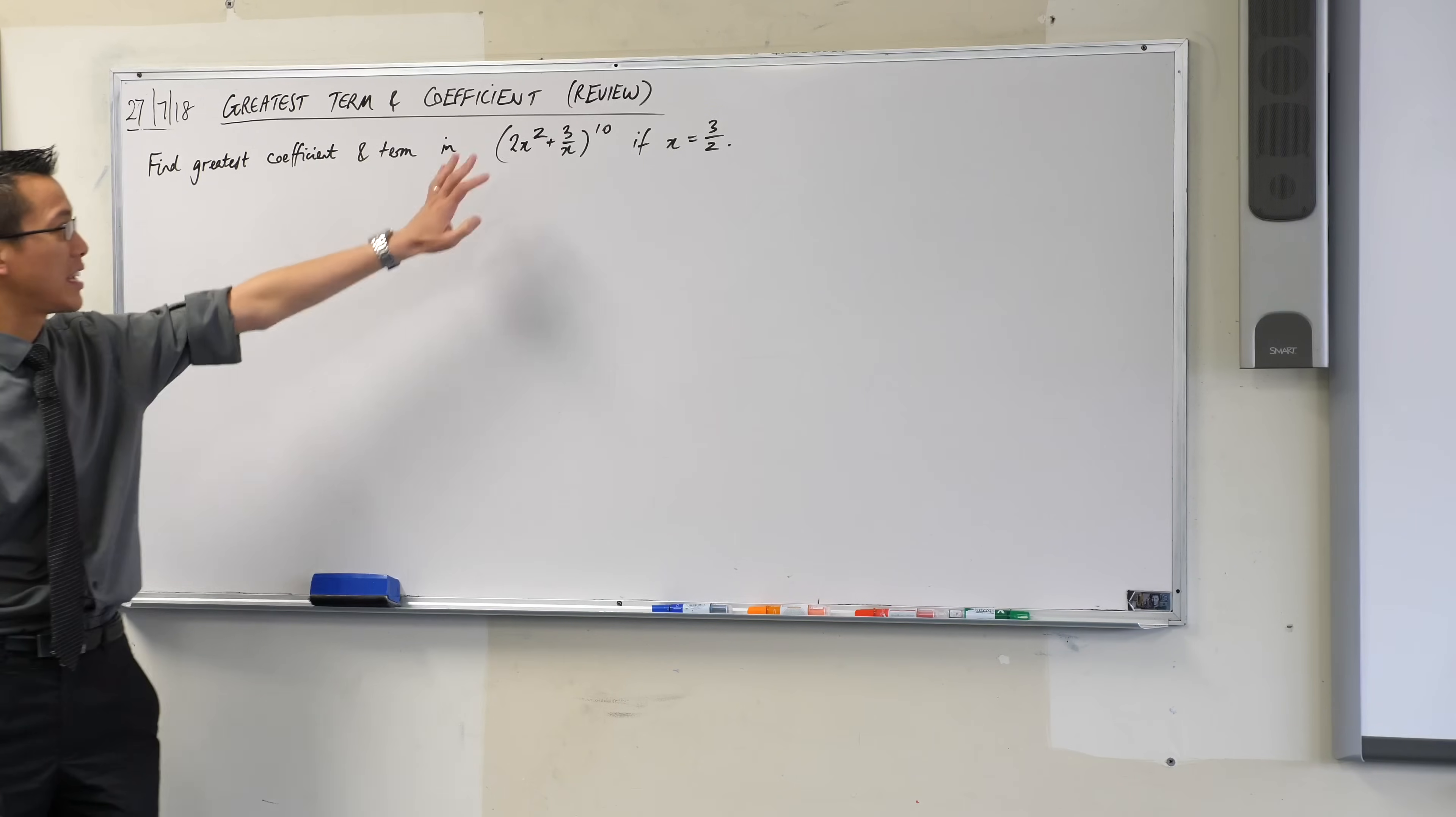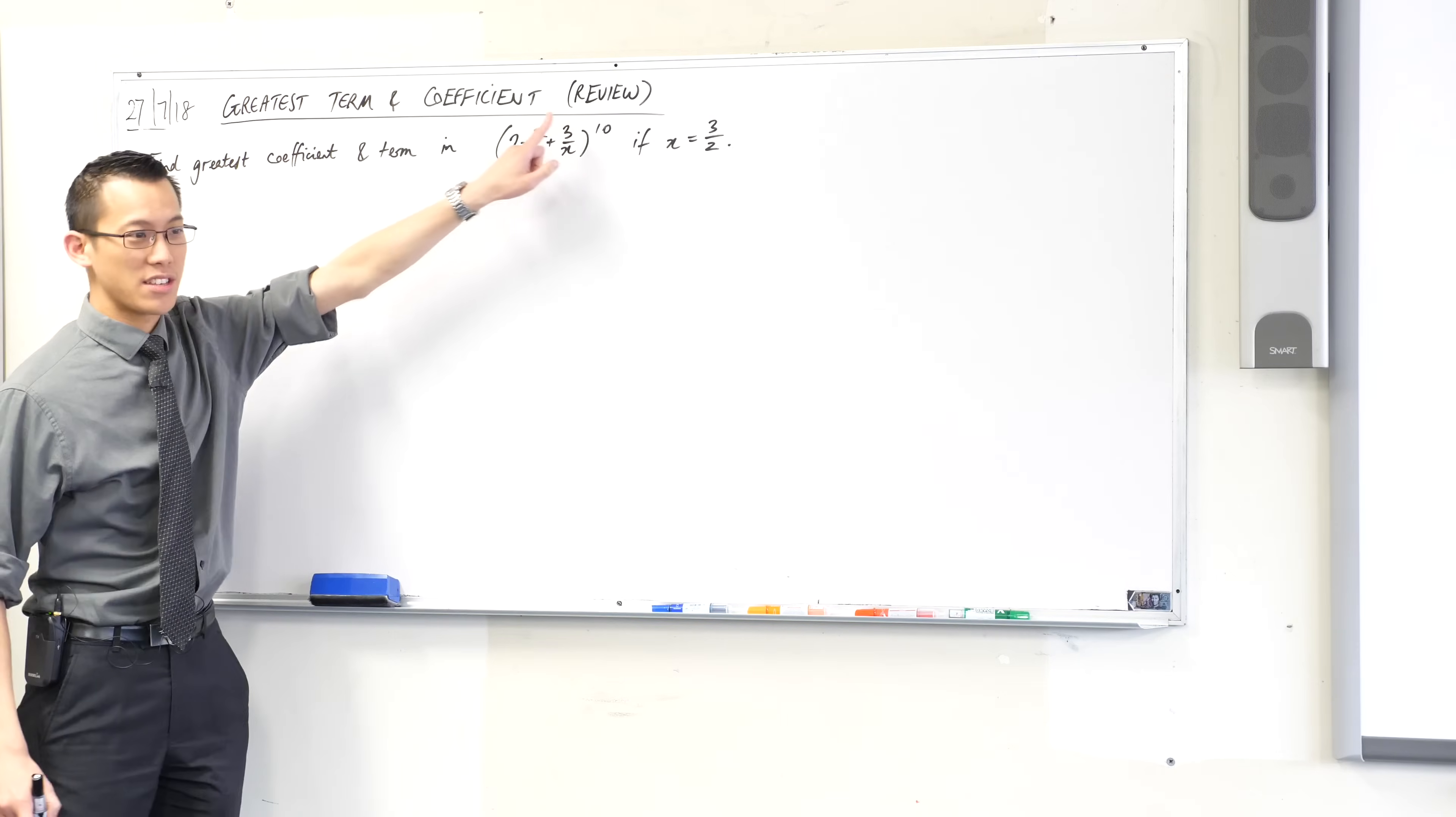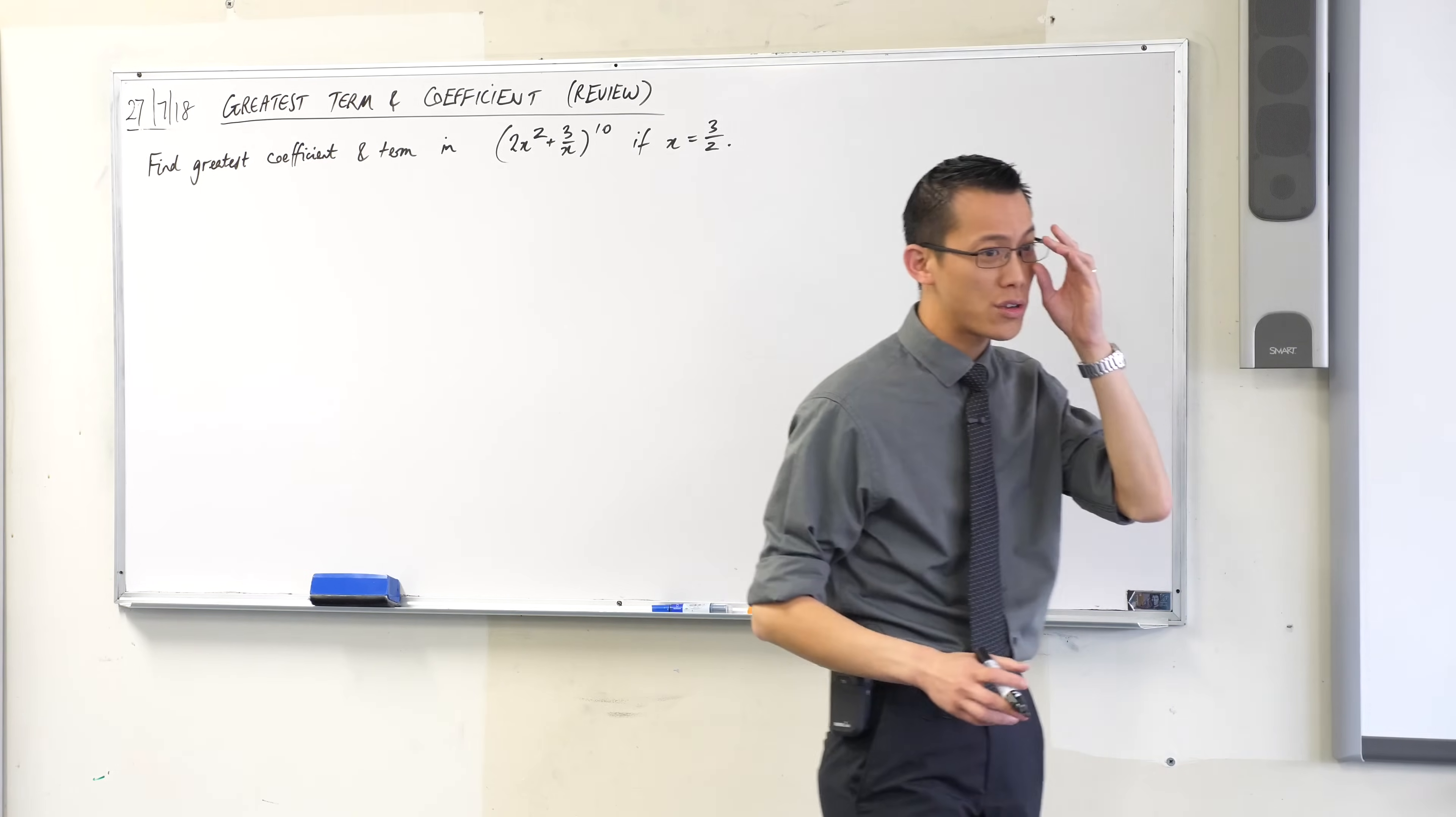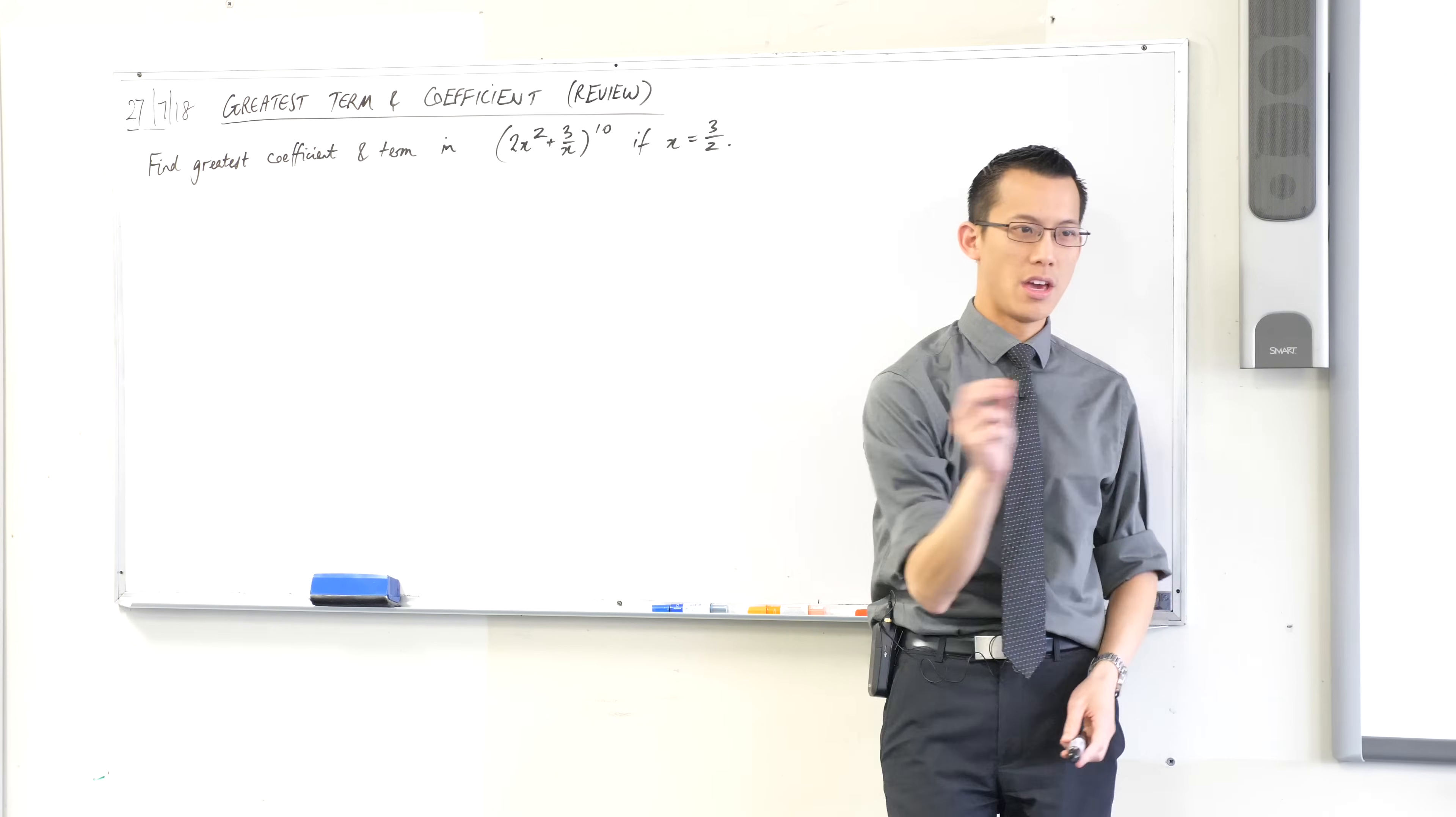Here's a nice simple setup. They give you a binomial. It's worth pointing out this binomial is a bit gross looking. You've got numbers in these coefficients, you've got an x squared, you've got a 1 over x, an x to the negative 1 if you like. And then this is one of those times where they'll supply a value for x, and if you know that, then you can work out not just the greatest coefficient but the greatest term.